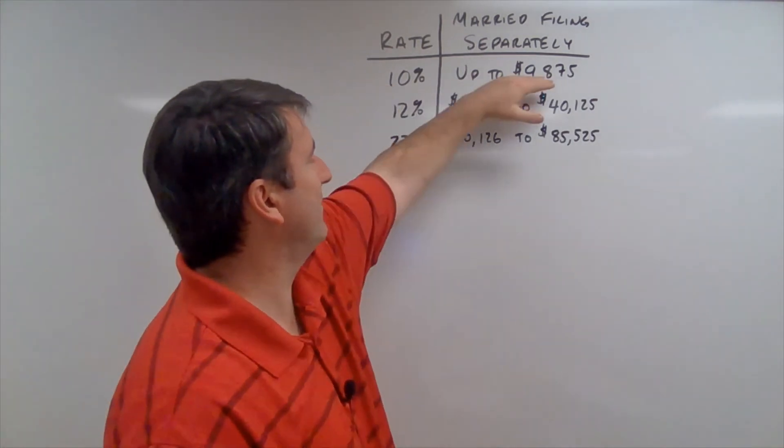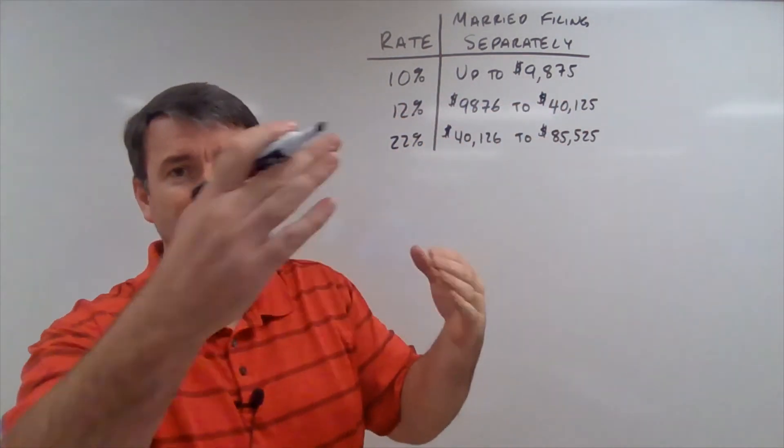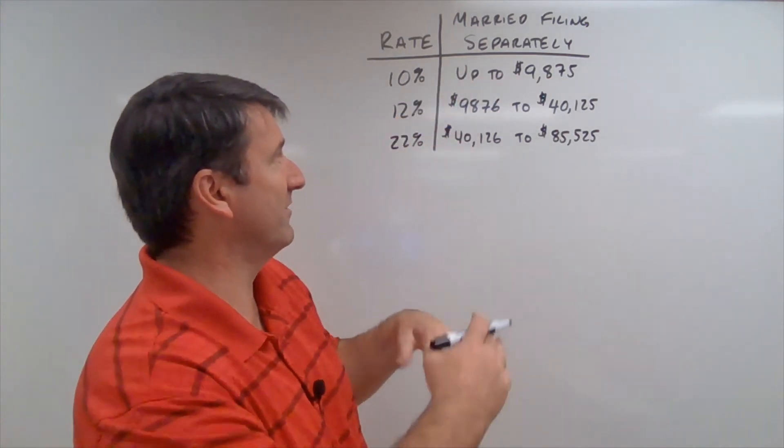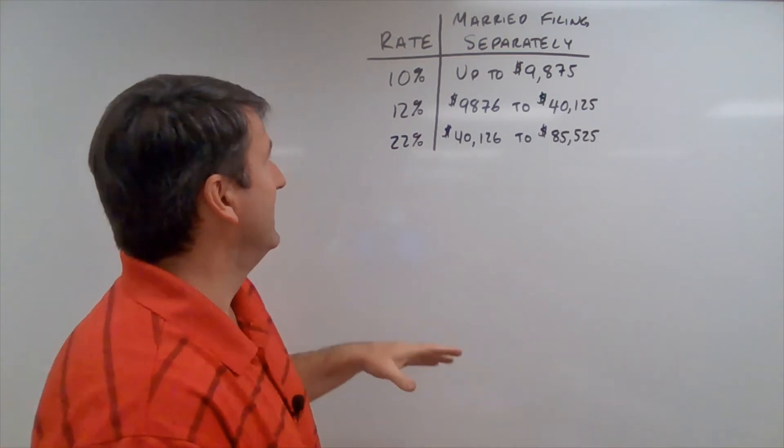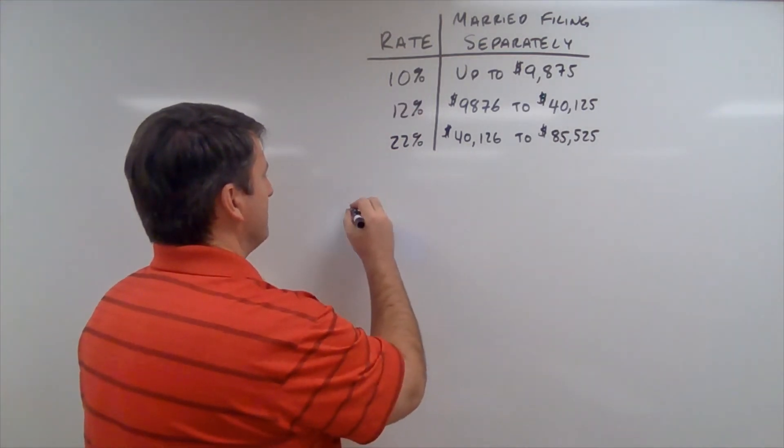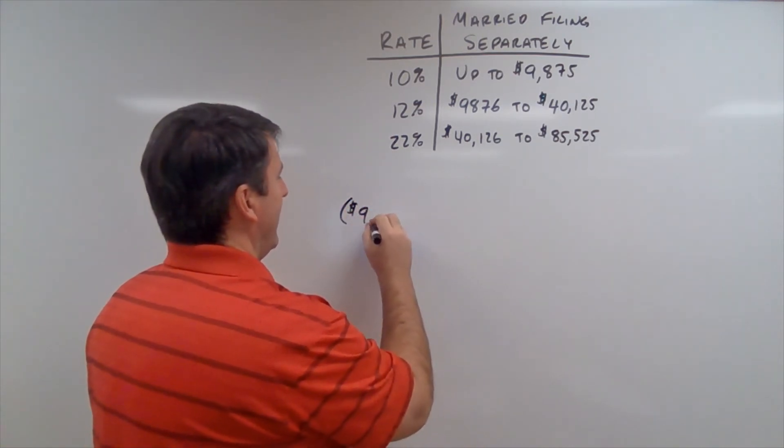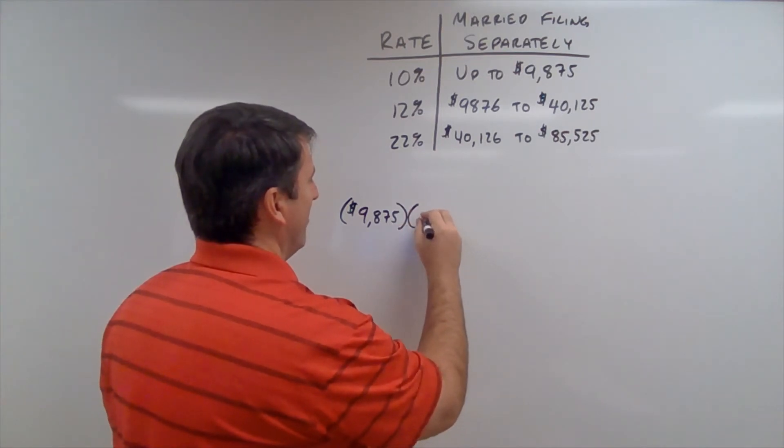So, for this first tax margin, we're above that. So, all of the money, the first $9,875 that she made, she's going to pay 10% tax on that. So, this is going to be $9,875. We're going to multiply that by .10.